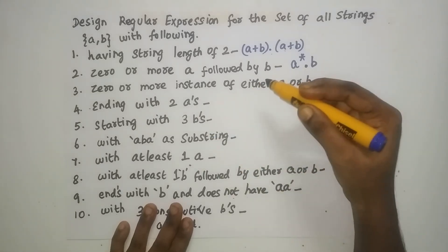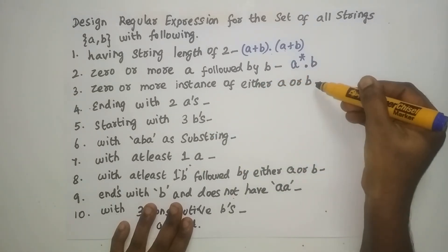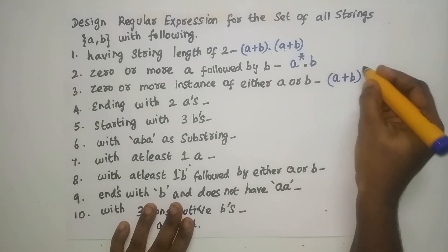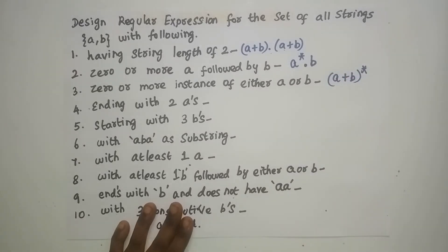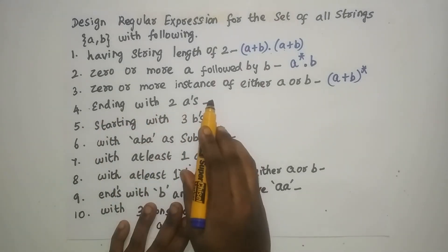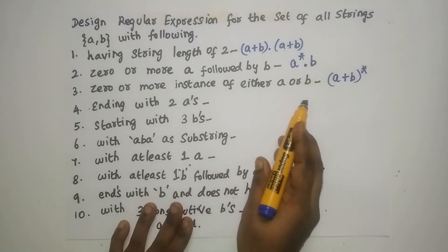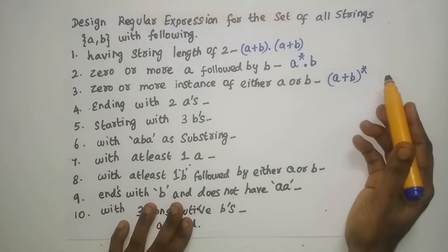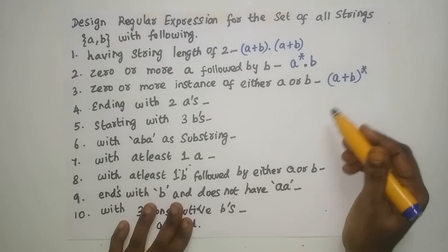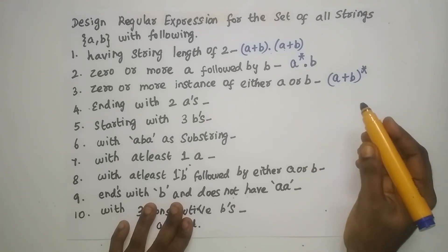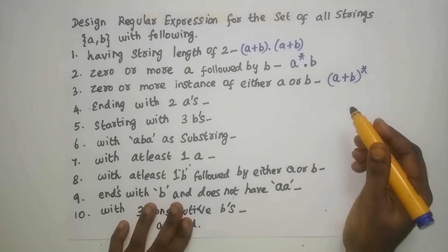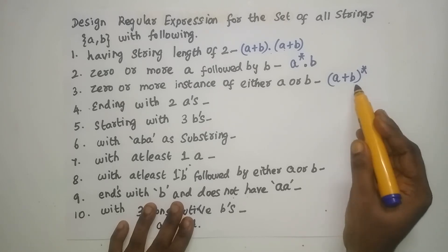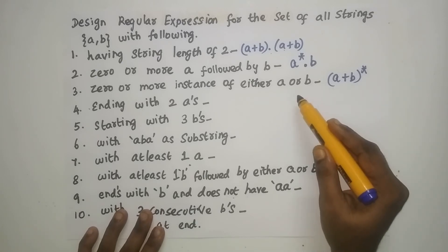Coming to 0 or more instances of either A or B: you can have either A or B — that is union — and 0 or more instances of the whole gives (A + B)*. The design of the regular expression depends on how you understand it; you must clearly differentiate and understand the usage of each operator based on the given description.